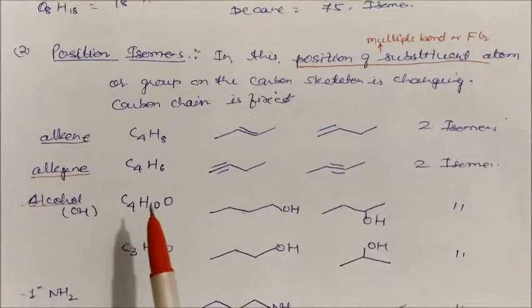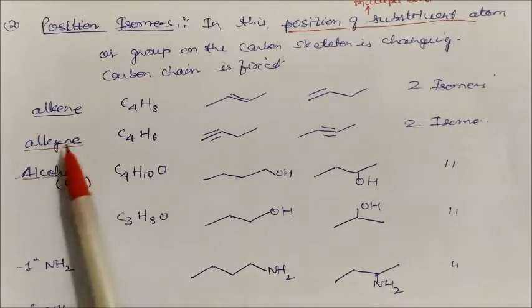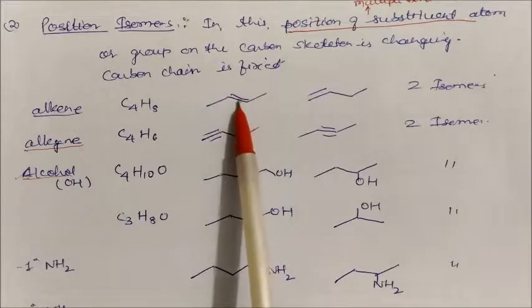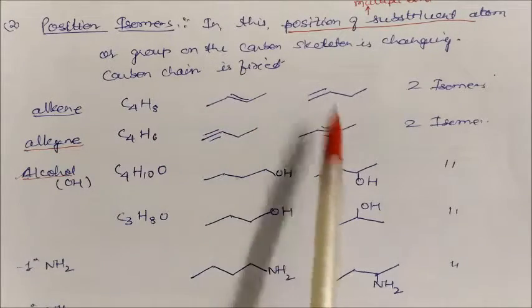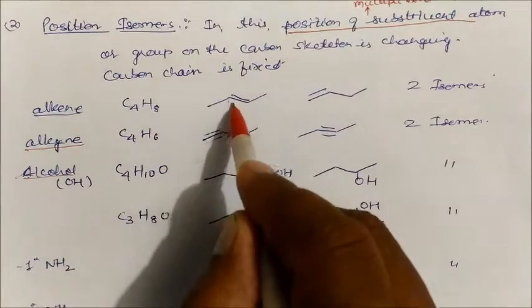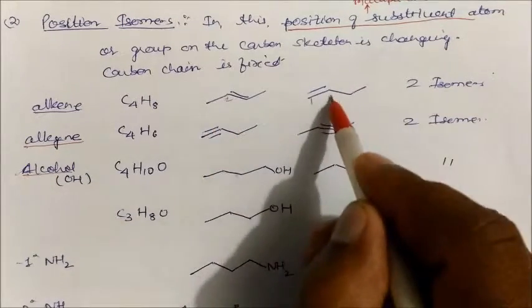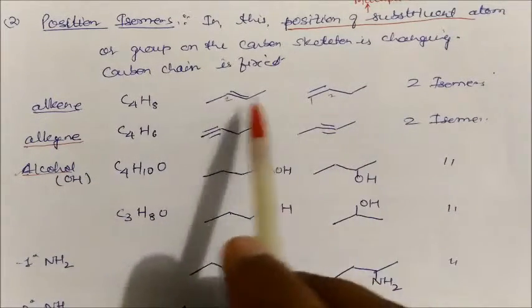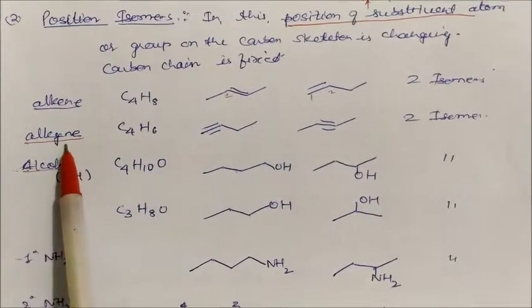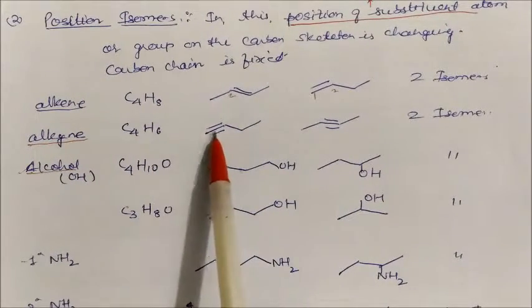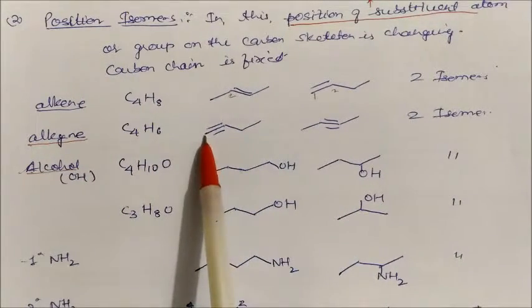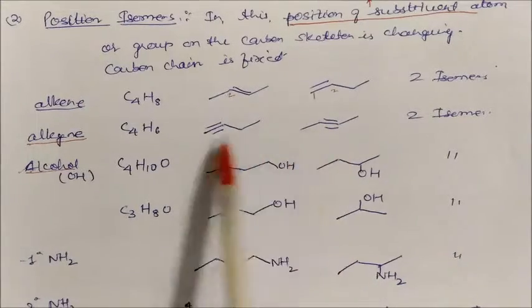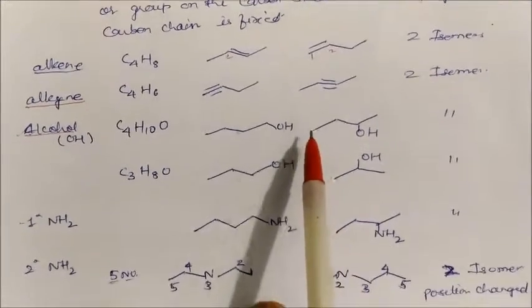For example, in alkenes: in butene, one double bond is at the second carbon and another isomer has the double bond at the first carbon — giving two isomers where the position of the double bond has changed. Similarly in alkynes, the triple bond can be at the first or second carbon, giving two isomers. These are position isomers.